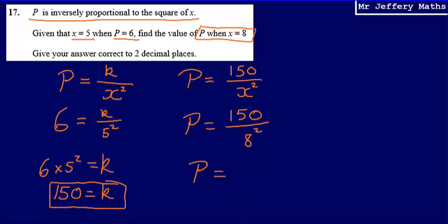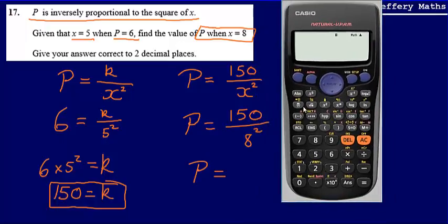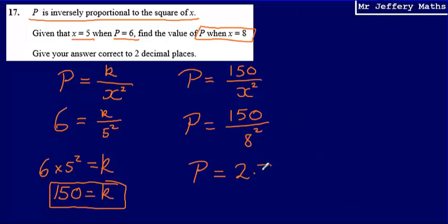And for this we're going to need a calculator. So let's just substitute in here. It's 150 divided by 8 squared. That's going to give us an answer of, and it says give your answer correct to two decimal places, so our answer is going to be 2.34. So final answer, P is equal to 2.34.